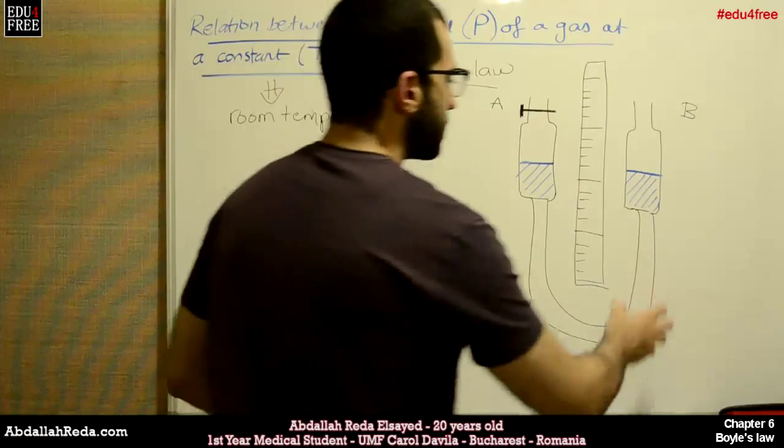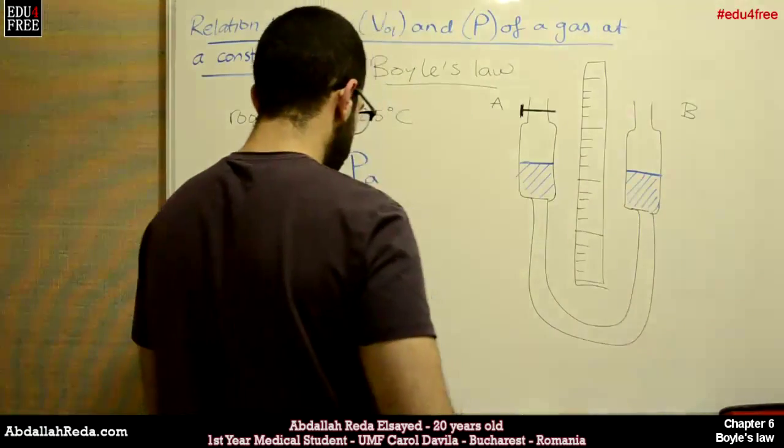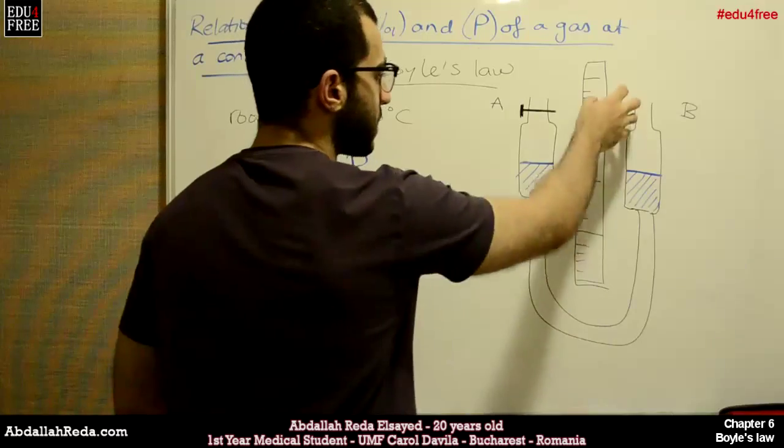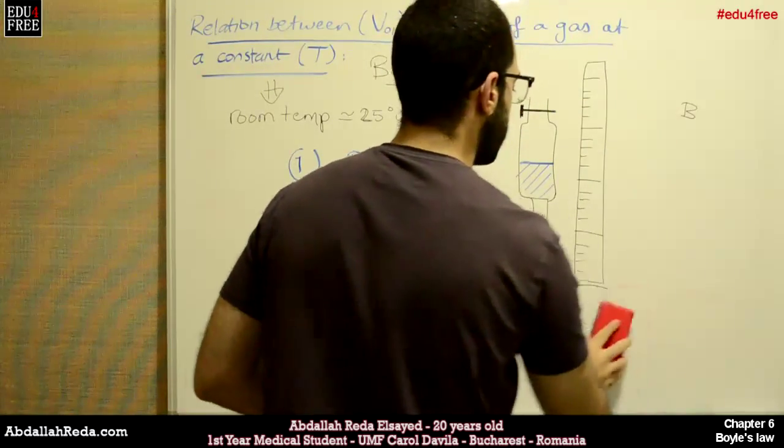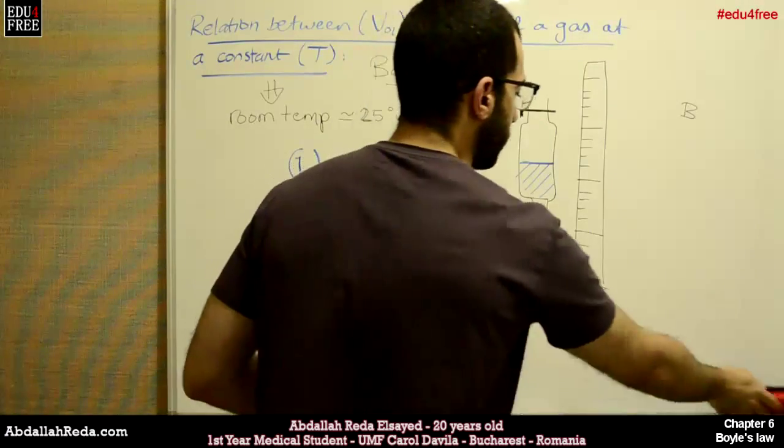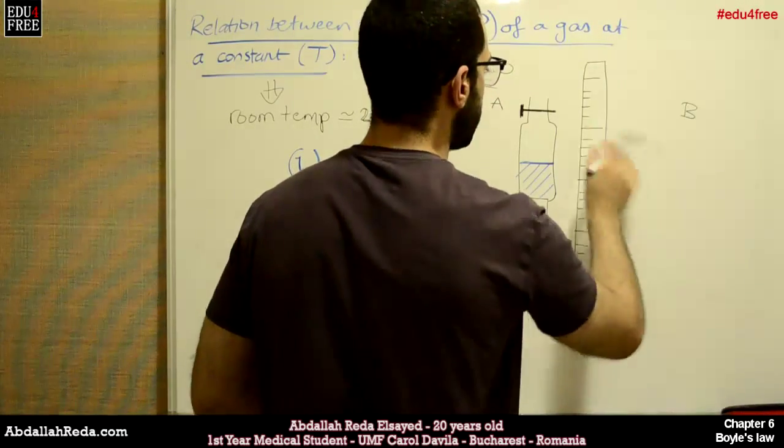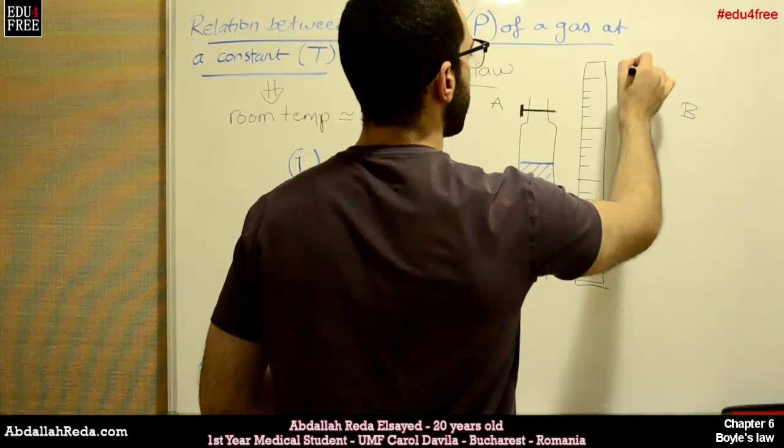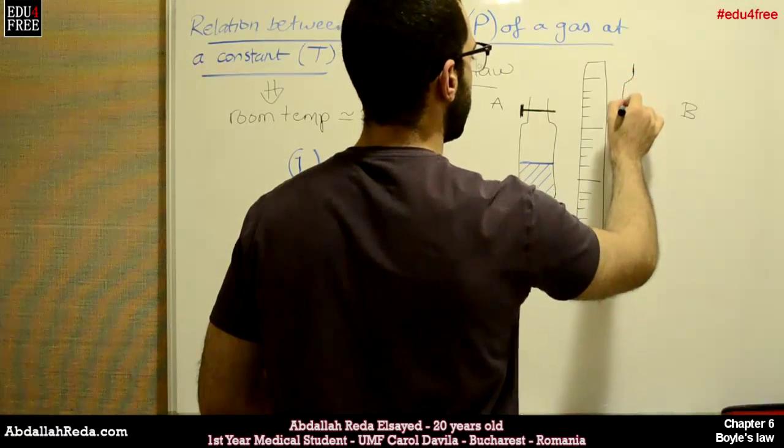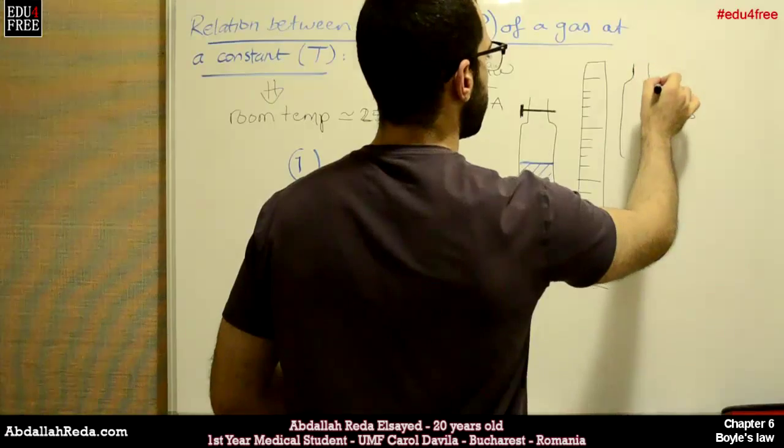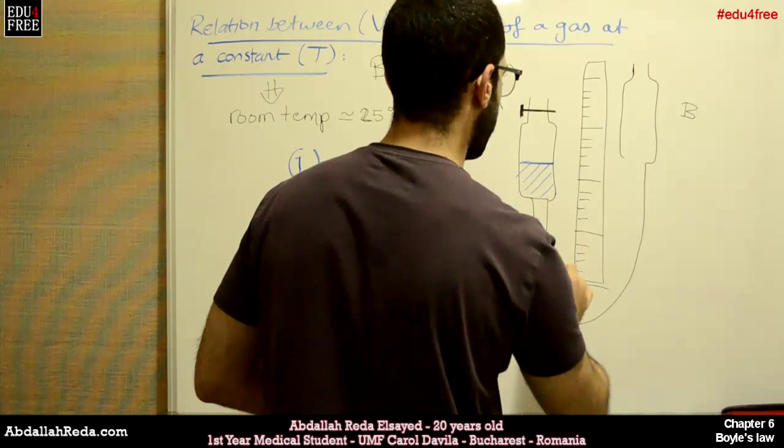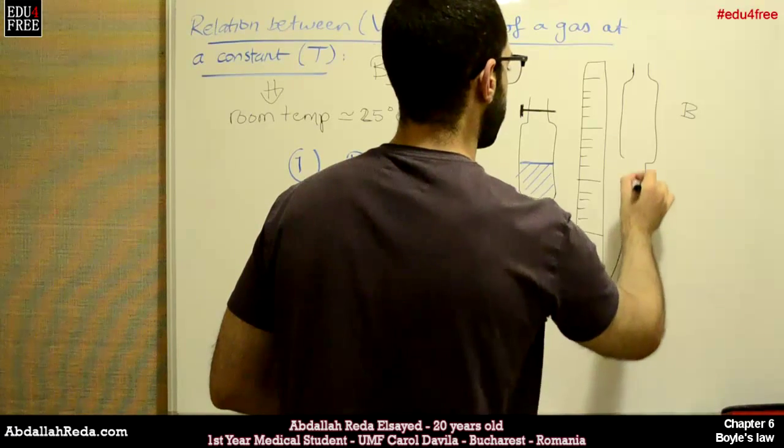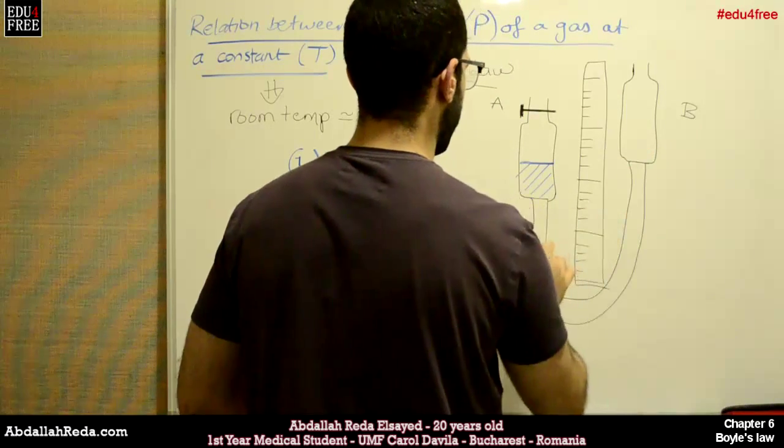What we're going to do next is that we're going to raise this burette above this original position like this. Of course a little bit of tension will be added to the rubber tube here. So let's say we're going to raise it that much here. And this is the rubber tube connected between the two burettes.